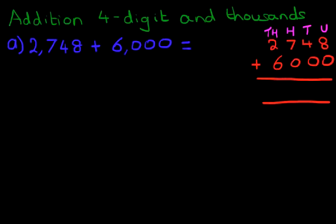Now, you know the routine by now. What we do is we add the columns one by one, starting with the column on the right-hand side first. That's the units column. So what is 8 plus 0? That's 8.